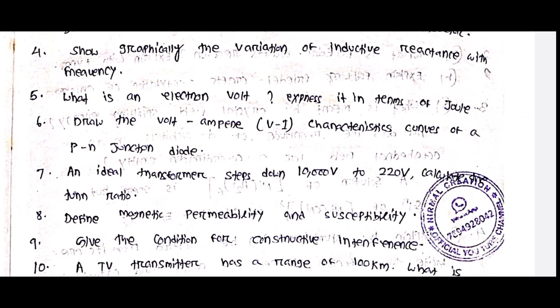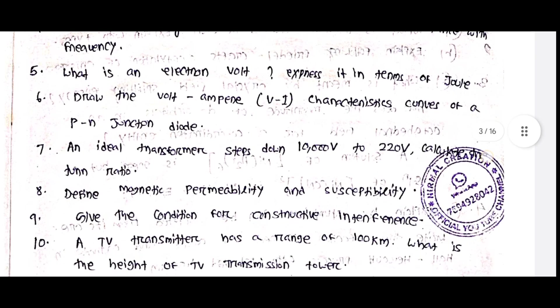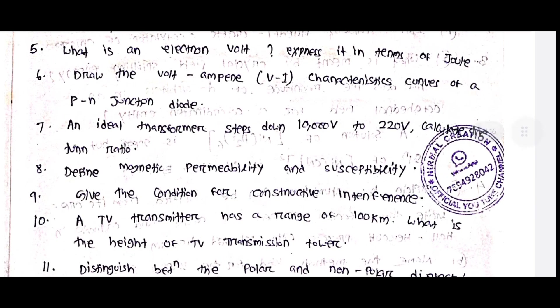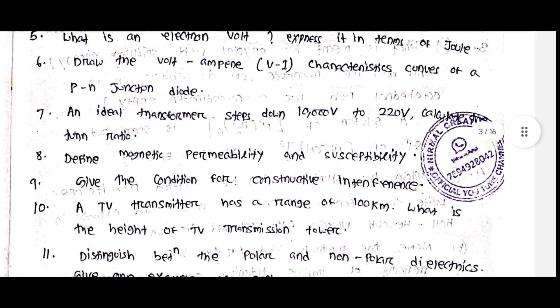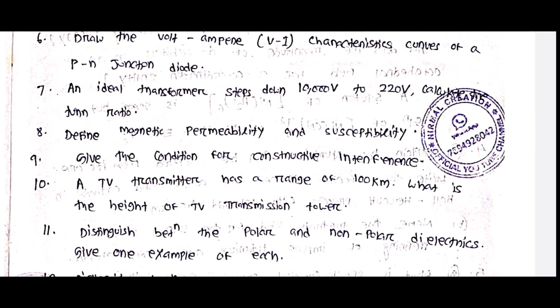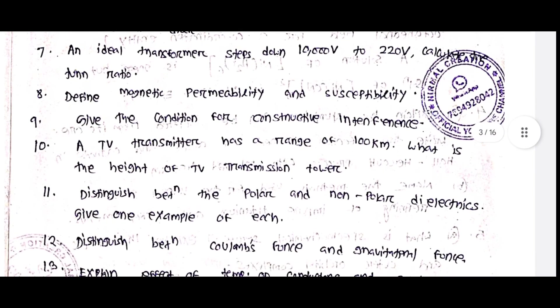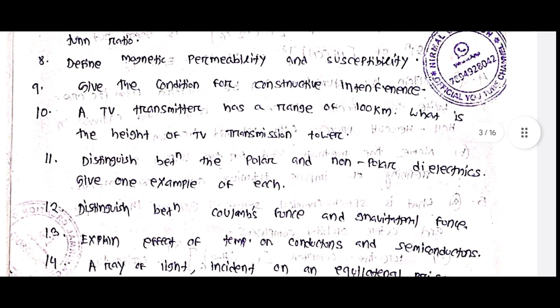Next: What is an electron volt? Express it in terms of joules. Draw the volt-ampere (V-I) characteristic curves of a P-N junction diode. Next, an ideal transformer steps down 10,000 volts to 220 volts — calculate the turn ratio.